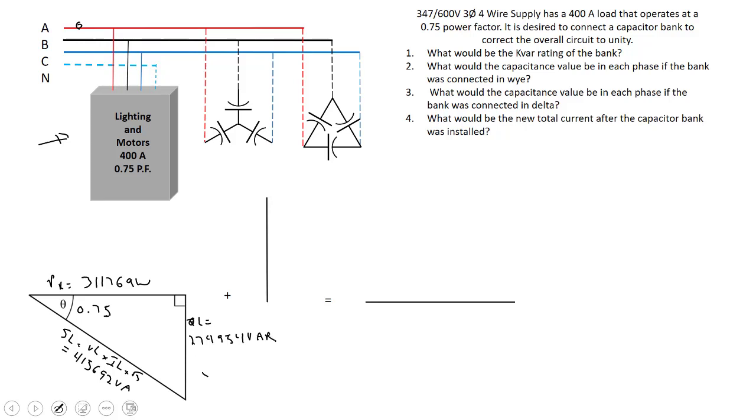Because this is corrected to unity, all that really means is the only thing that's going to be left coming from the circuit is going to be the power, the true power of our loads. The S total, final S total, is going to be exactly the same as the P total. In this case we just have these loads here, so that would be 311,769 VA or watts because it's exactly the same value.